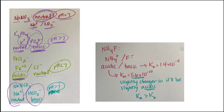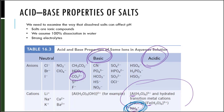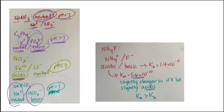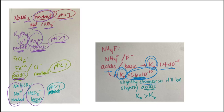Ammonium fluoride is interesting. Ammonium makes the solution more acidic, and fluoride makes it more basic. To decide, we compare Ka and Kb values for ammonium: the Ka value is 5.6 × 10⁻¹⁰ and the Kb value is 1.4 × 10⁻¹¹. The Ka is slightly bigger, so the acid strength is going to slightly overpower the base, and the solution should be slightly acidic.